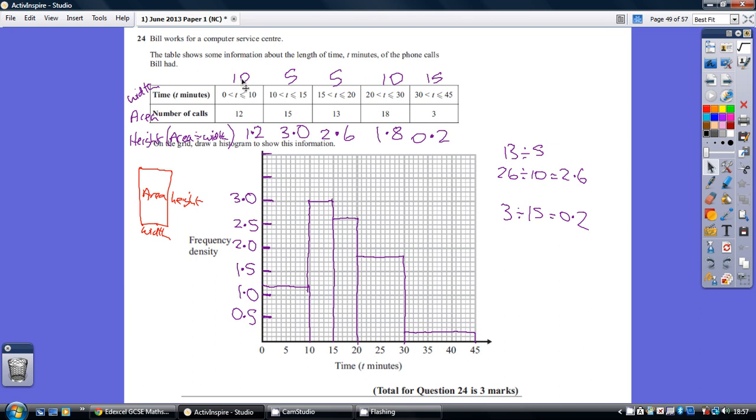So the first one is 10 along 1.2 up, 10 along 1.2 up. The second one is from 10 to 15, and it's 3 up, and so on. So basically, we just draw these over here. I do use a ruler in the real thing. It was hard for me to do that. So that's how we do this question.